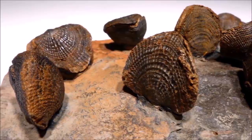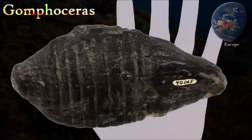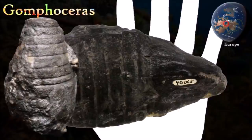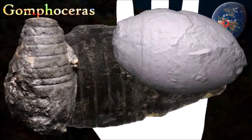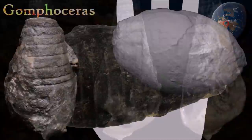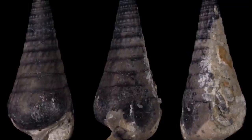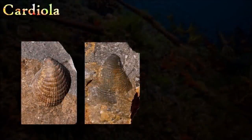Gomphoceras was a marine mollusk in the cephalopod group — the same class to which a chambered nautilus belongs. The thin walls inside the shell were closely spaced, and it had a large body chamber that narrowed toward the shell opening. At maturity, the aperture was complete but small, with little space for tentacles, suggesting that at maturity the animal could no longer feed and died after mating, as do many modern cephalopods.